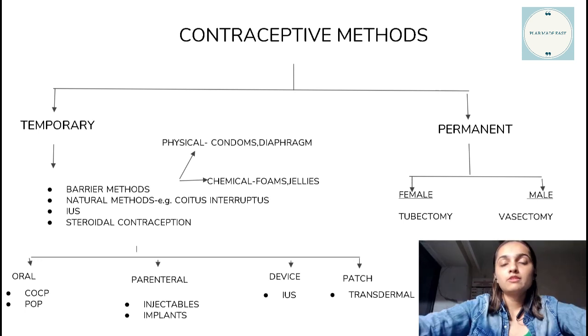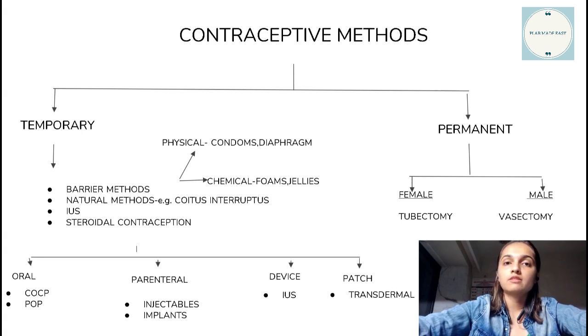Permanent methods of contraceptives include vasectomy for males and tubectomy for females.